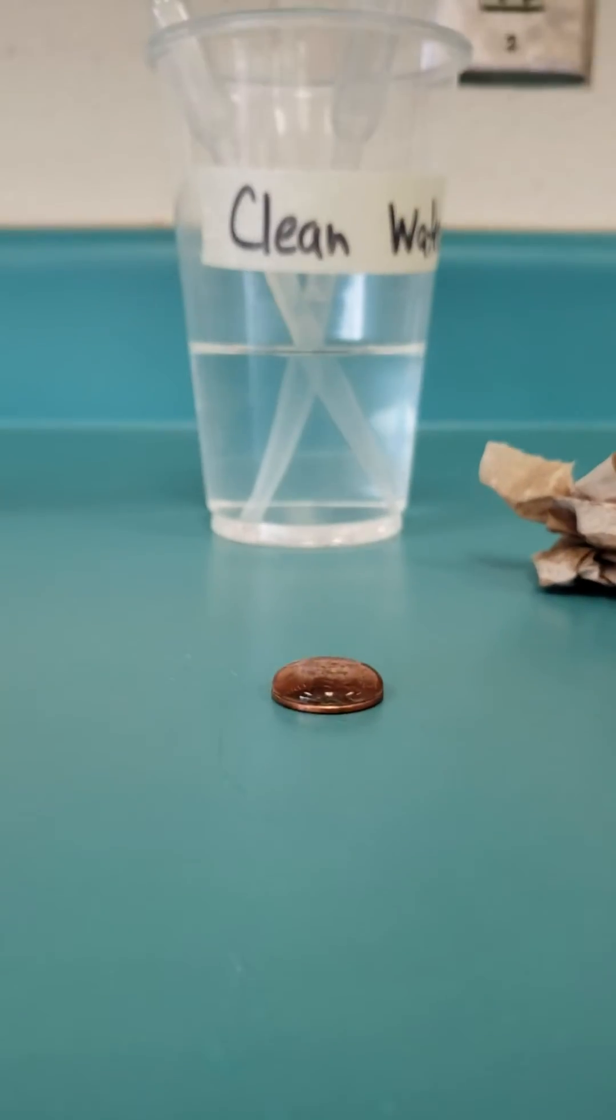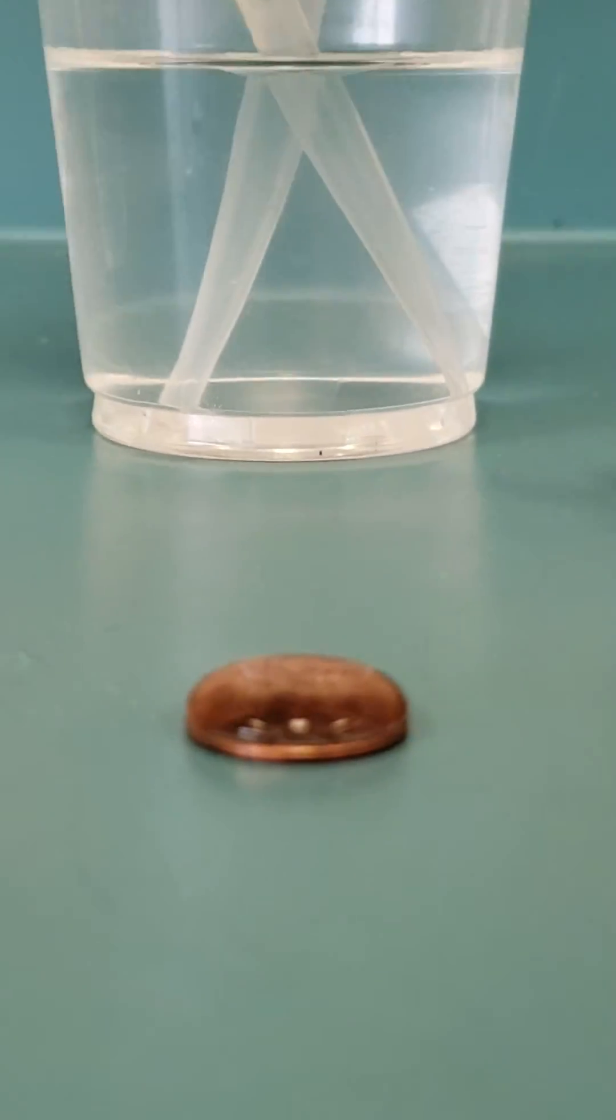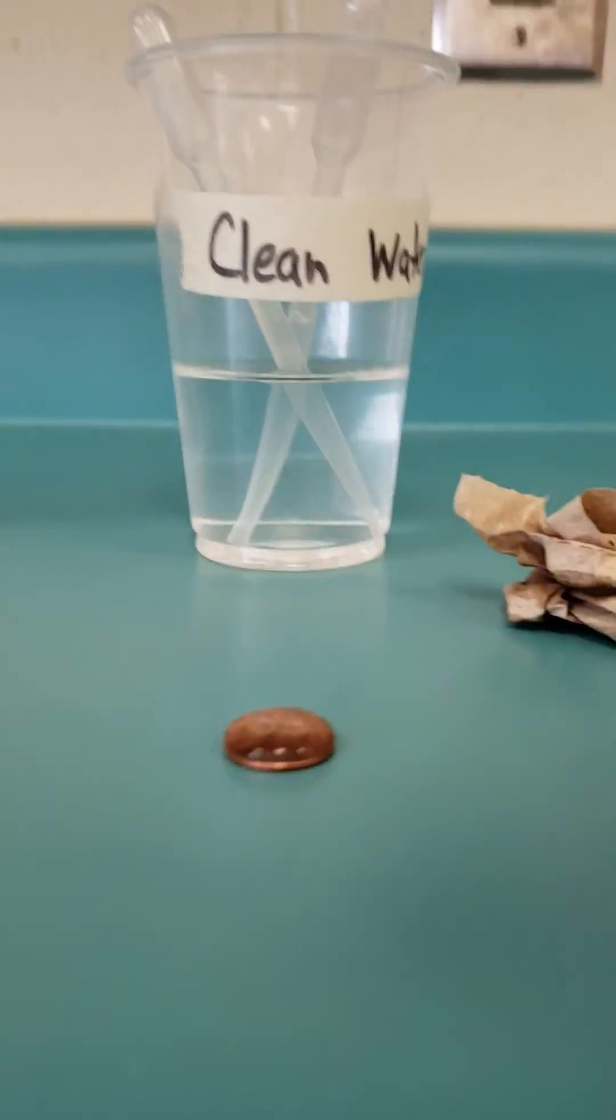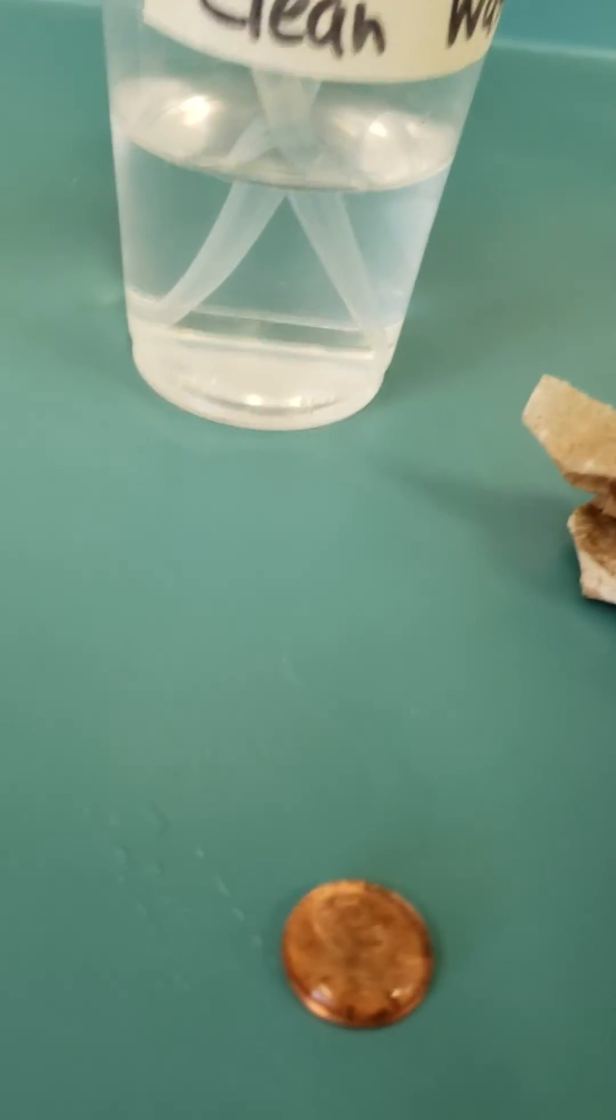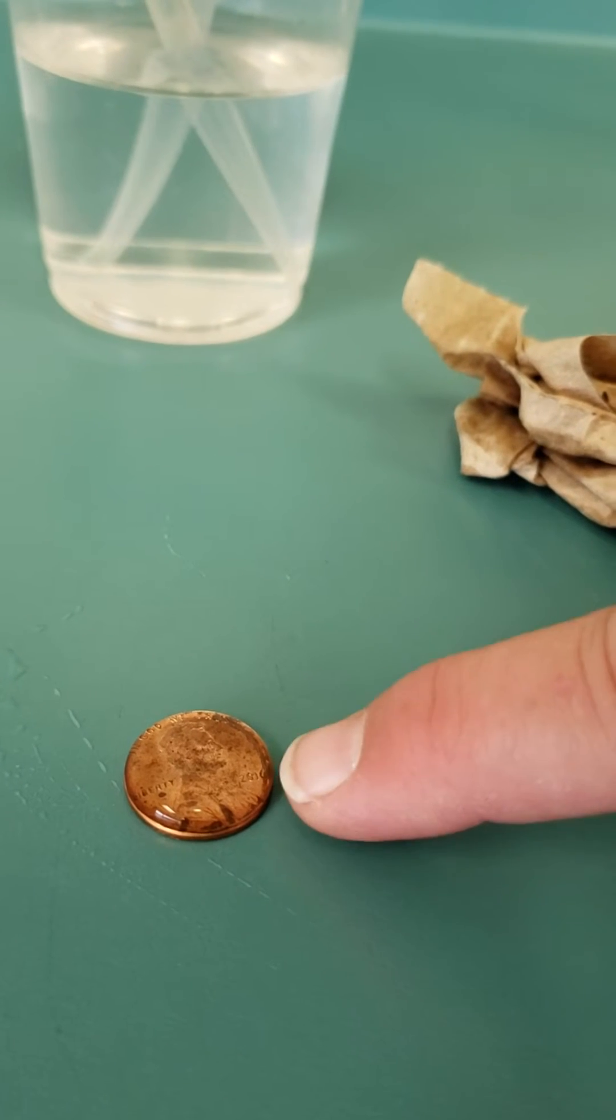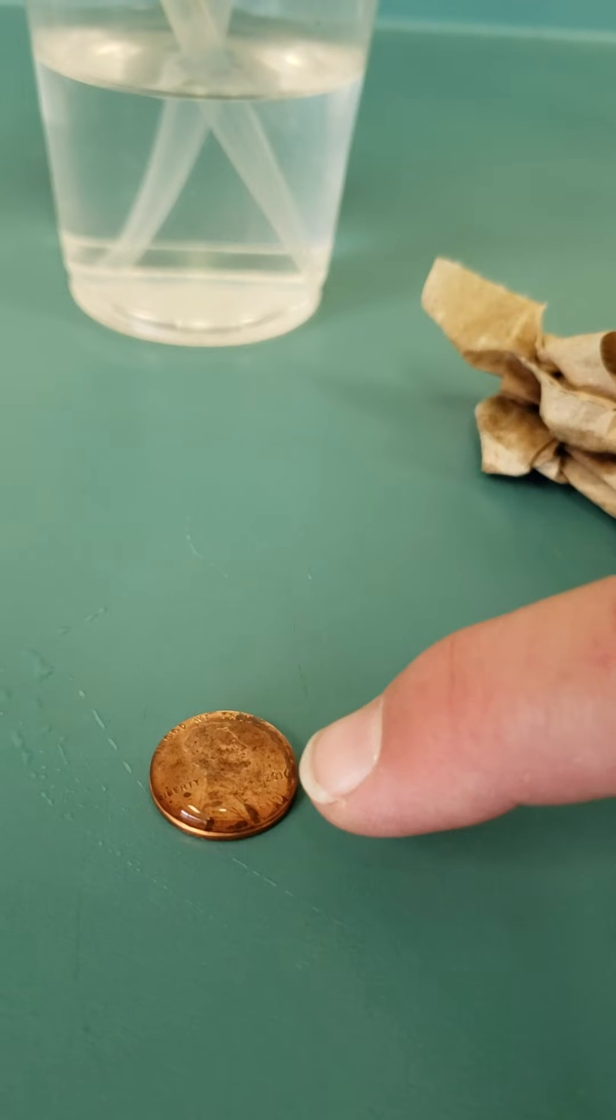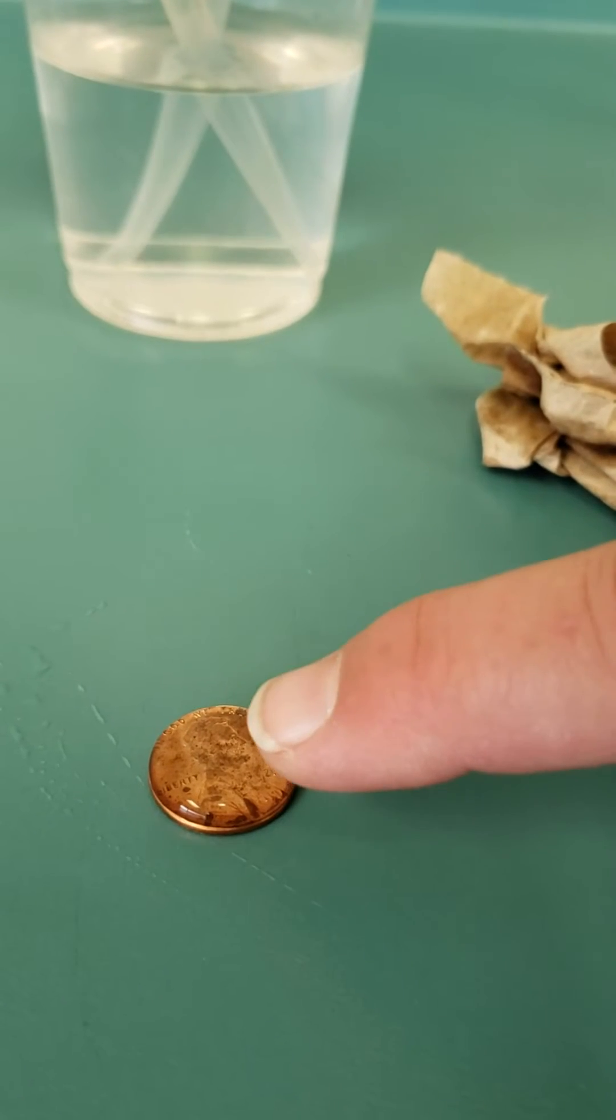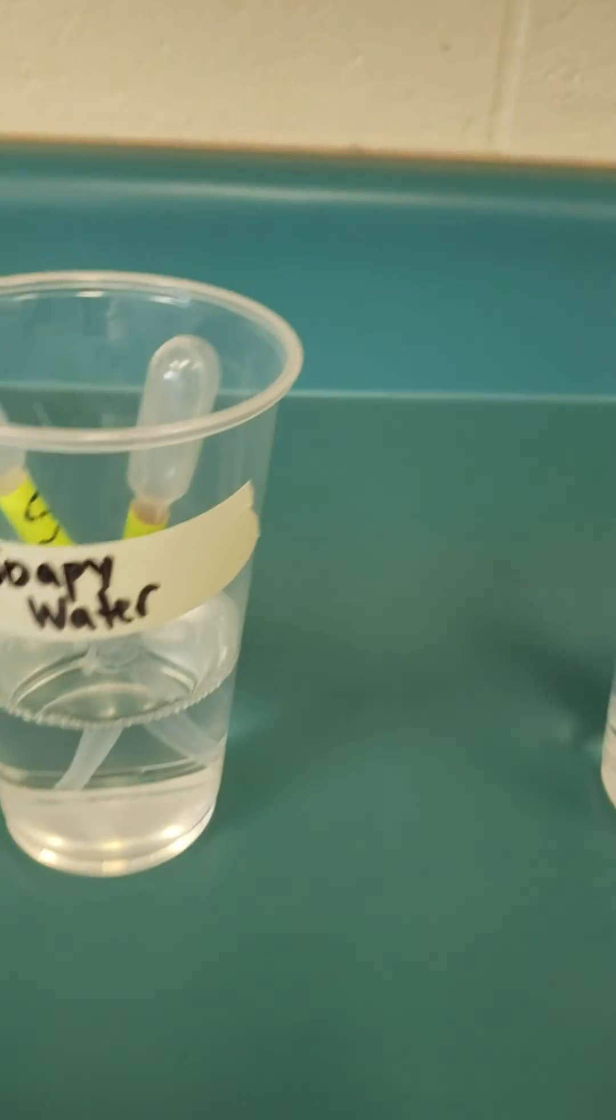That dome of water is happening because of the rim of our penny. You've got adhesion and cohesion. The water is able to adhere to the rim of the penny, and then the other molecules are able to cohere and stick to those water molecules, and that gives us that dome.